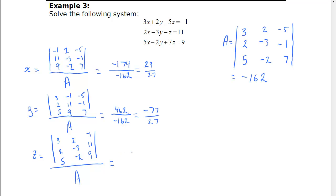And the last one, the numerator, we get a determinant of 48. 48, A we already did is negative 162. We're going to reduce that to lowest terms.